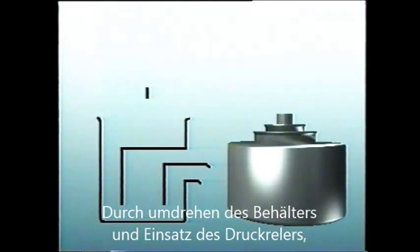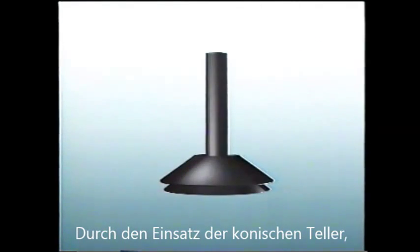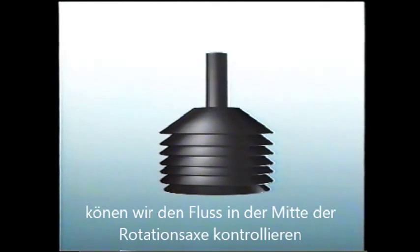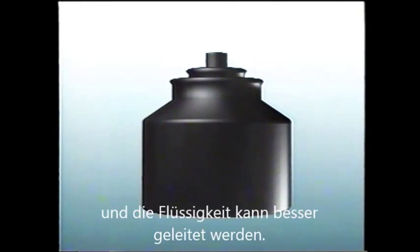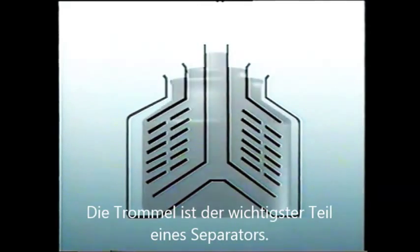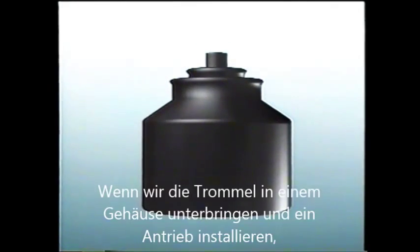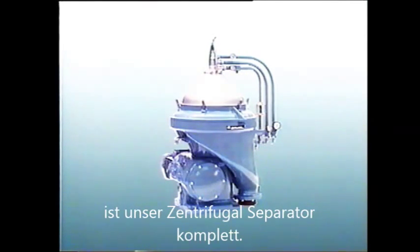The final improvement is to put holes in the disks in the region of the interface to speed up the liquid flow. By turning the dam from the balanced column tank into a ring or gravity disk, we can control the position of the neutral zone in the bowl. By turning the trays into conical disks or a disk stack, we have compensated for the smallest centrifugal force nearer the center of rotation and allowed the liquids to flow more freely. Finally, by making holes in the disks, we've improved the efficiency even more.